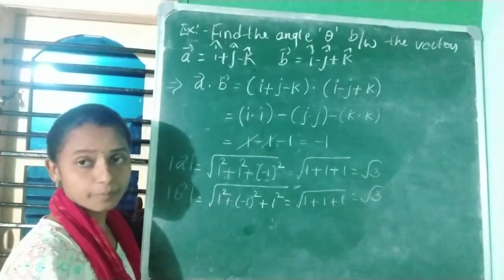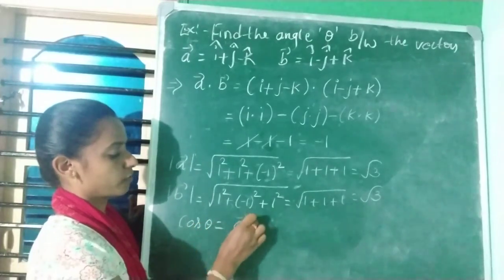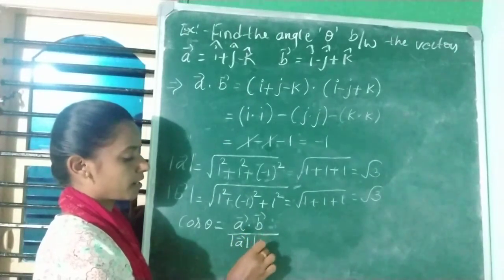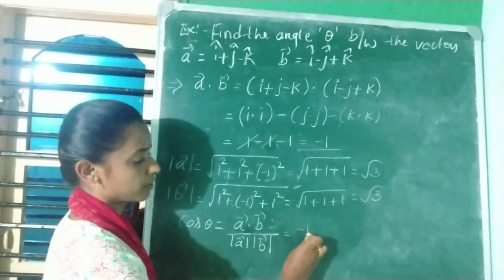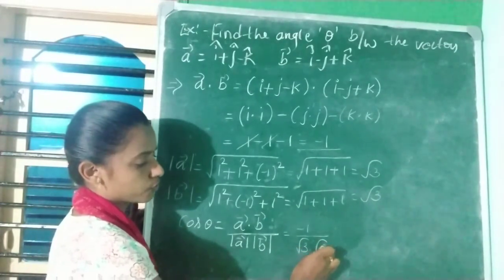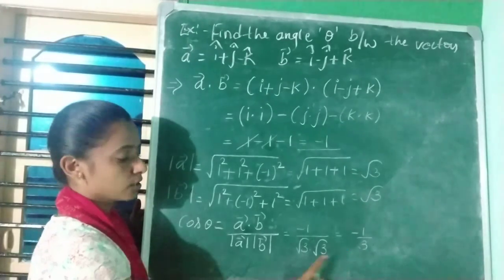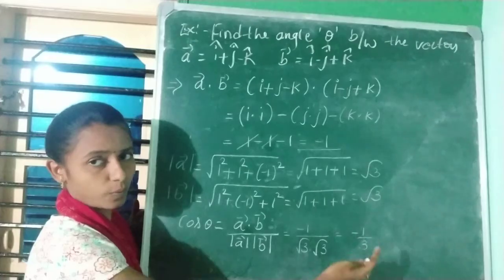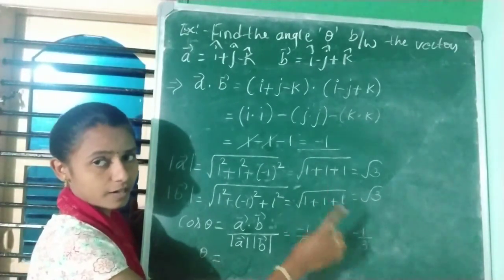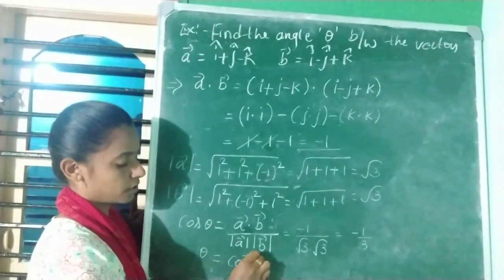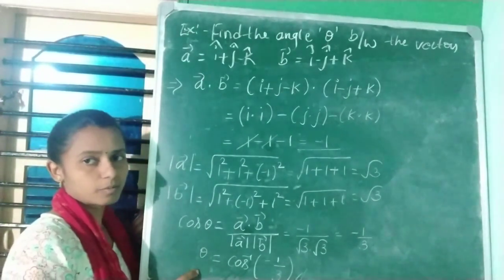Now substituting into the definition cosθ = a·b / (|a| × |b|): cosθ = −1 / (√3 × √3) = −1/3. Therefore, the angle between the two vectors is θ = cos⁻¹(−1/3).